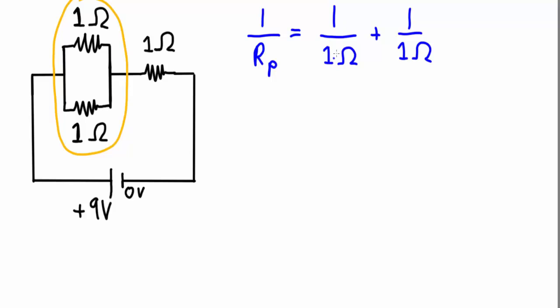1 divided by 1 is simply 1, and 1 divided by 1 is also simply 1. So I can just do this as 1 plus 1, and so that's going to give me 2. So 1 over RP is equal to 2, and the unit is inverse ohms. So that means if I was to flip both sides of the equation, I would get that RP is equal to a half an ohm, which is equal to 0.5 ohms.